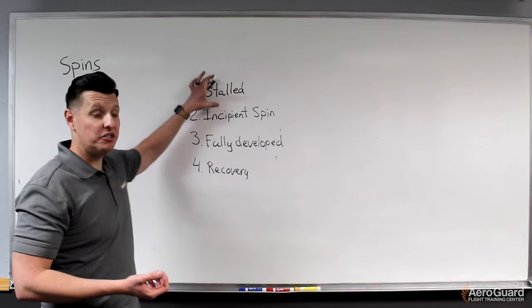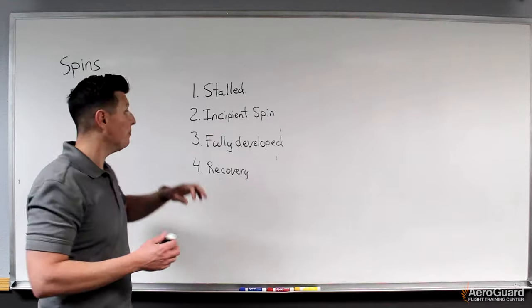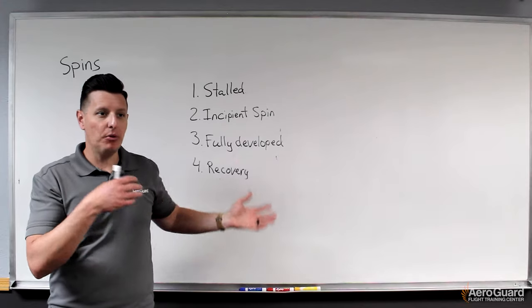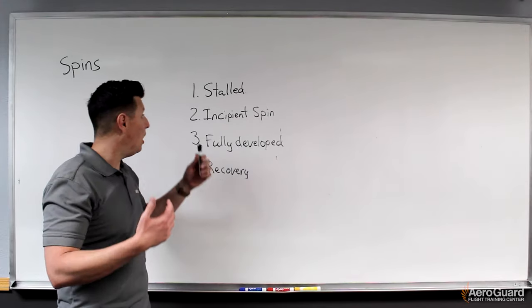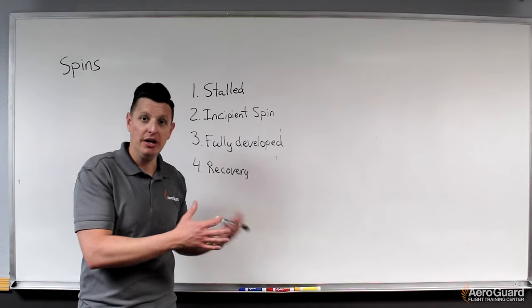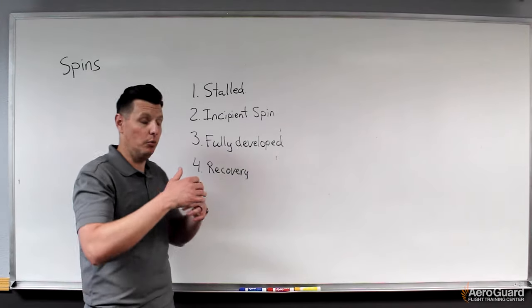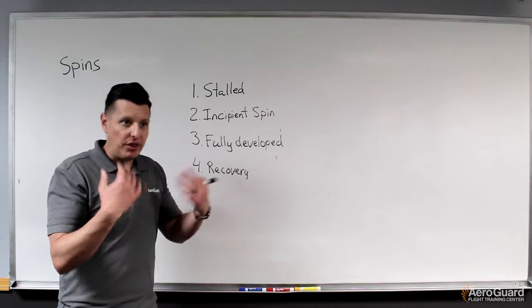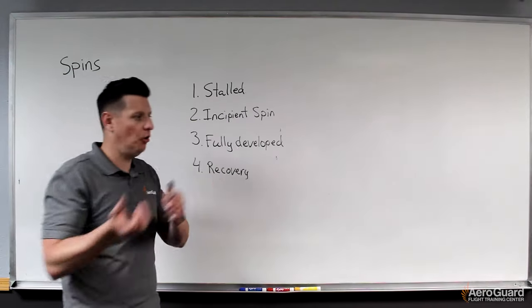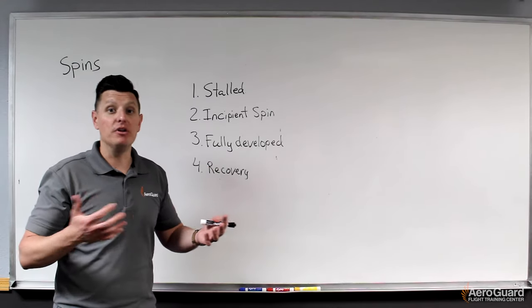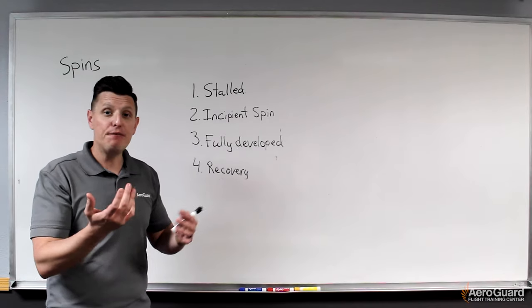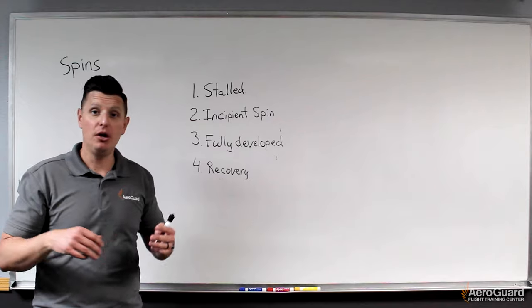So I want to walk through each of these different pieces and make sure we understand how they ultimately come together. So we understand how an airplane stalls. Once again, you can reference the previous video. Now, how do we get into this incipient phase? Well, really for the airplane to start to get into this uncontrolled condition, we are ultimately looking to have one wing become more stalled than another wing. That's where this condition of a spin will begin.